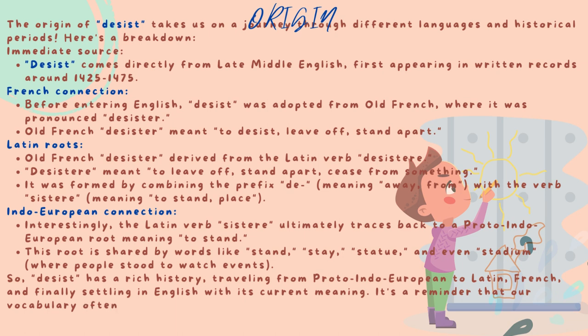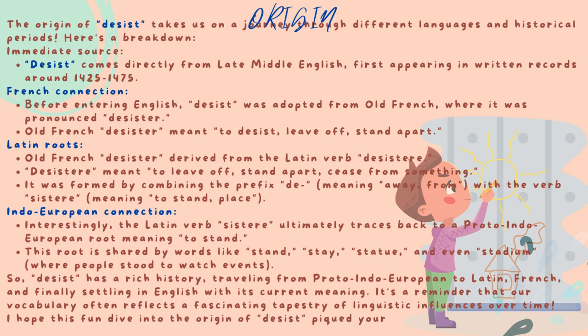Indo-European connection: interestingly, the Latin verb sistere ultimately traces back to a Proto-Indo-European root meaning to stand. This root is shared by words like stand, stay, statue, and even stadium, where people stood to watch events. So desist has a rich history, traveling from Proto-Indo-European to Latin, French, and finally settling in English with its current meaning. It's a reminder that our vocabulary often reflects a fascinating tapestry of linguistic influences over time.